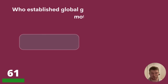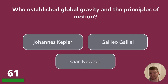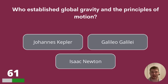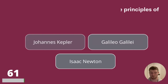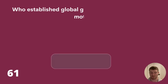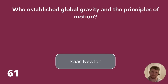Question 61. Who established global gravity and the principles of motion? Johannes Kepler, Galileo Galilei, or Isaac Newton? The answer is Isaac Newton.